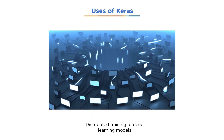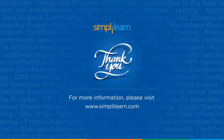Another use of Keras is in distributed training of deep learning models. Distributed training means we can split our deep learning model into different parts and train it on systems all across the globe, making training extremely fast. This also saves computational power, as resources required to train a deep learning model are distributed across various systems and go down significantly.